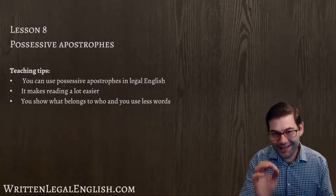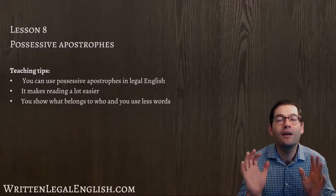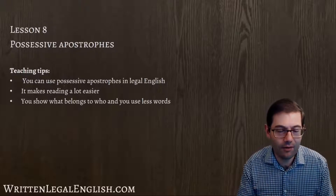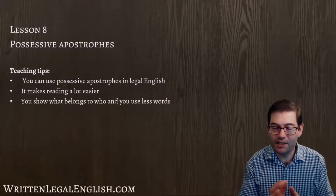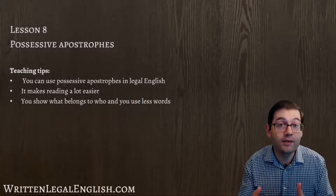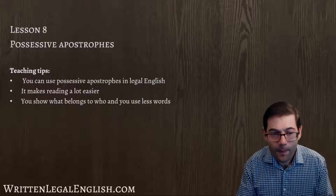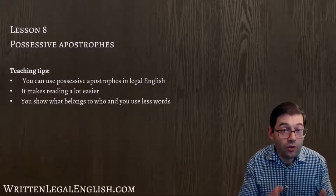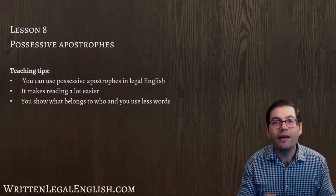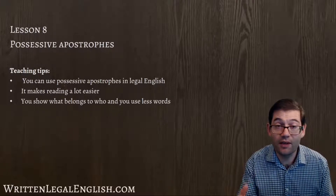So you can use possessive apostrophes in legal English — it's okay, you can do it. It makes reading a lot easier. Using possessive apostrophes shows that you're thinking about the client or the judge and you're trying to make their lives easier. You do that because you clearly show what belongs to whom, and you use fewer words to communicate your message.